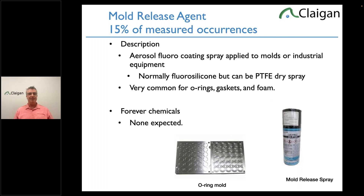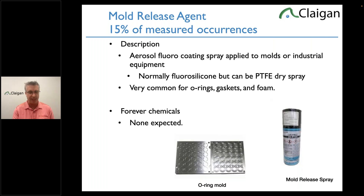The amount of mold release left on the surface won't produce measurable PFOA — we're talking hundreds of ppm of fluorine, but not enough to generate 25 ppb PFOA. So PFOA risk is very low from release agents. Your O-rings, gaskets, and foams all have it — that's the reality. About one in four O-rings and gaskets will have measurable PFAS. Anti-drip agent is ridiculously common in electronics.